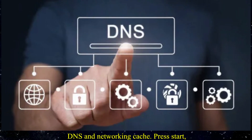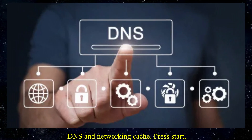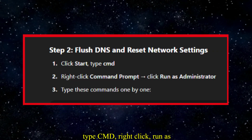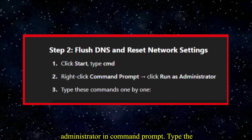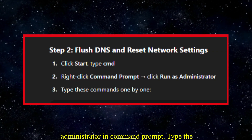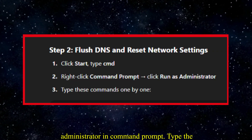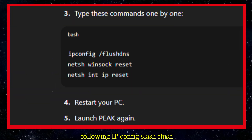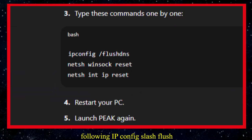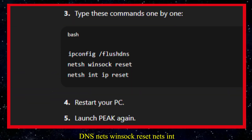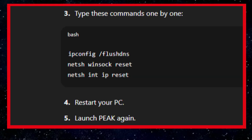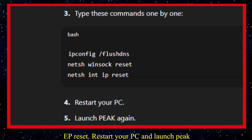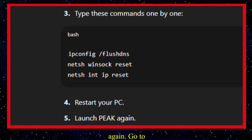We'll reset your DNS and networking cache. Press Start, type CMD, right-click, and run as administrator. In Command Prompt, type the following: ipconfig /flushdns, netsh winsock reset, netsh int ip reset. Restart your PC and launch Peak again.